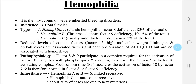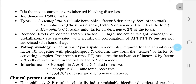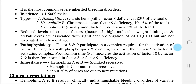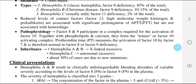The third type is hemophilia C, which is usually mild, caused by factor 11 deficiency, representing 2% of the total. Reduced levels of contact factors — factor 12, high molecular weight kininogen, and prekallikrein — are associated with significant prolongation of aPTT but are not associated with hemorrhage. Factors 8 and 9 participate in a complex required for the activation of factor 10, together with phospholipids and calcium, forming the factor 10 activating complex.